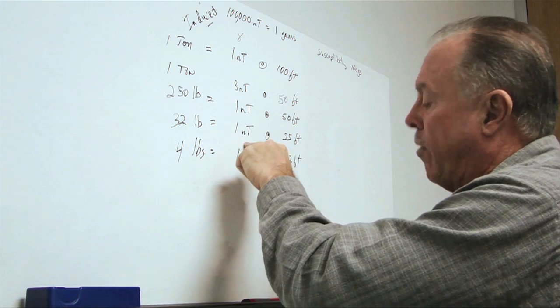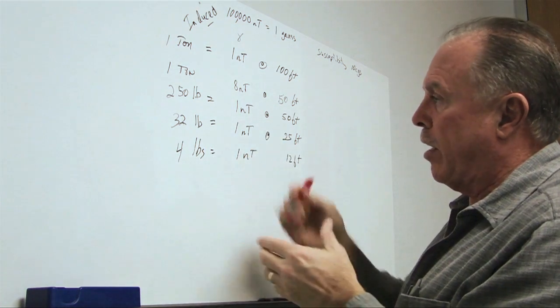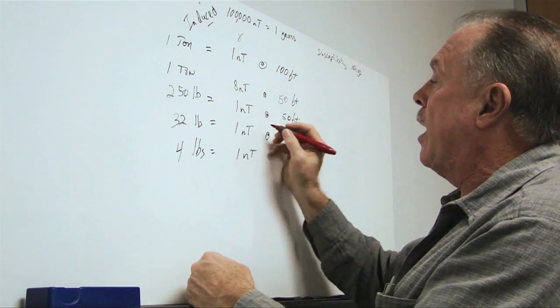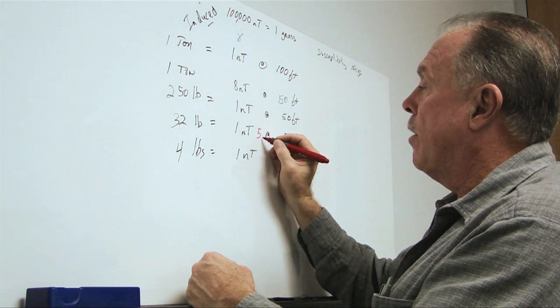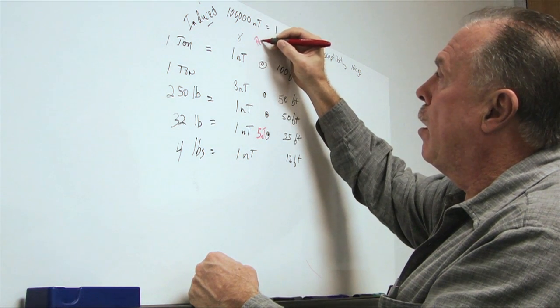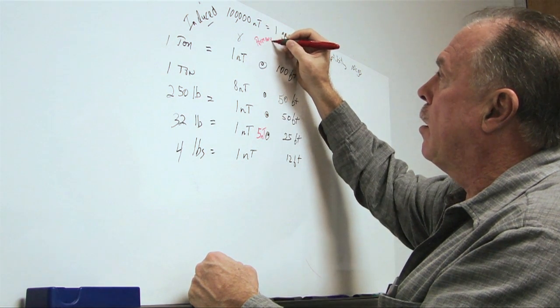So, instead of having a 1 nanotesla anomaly of 32 pounds at 25 feet, we might easily get a 5 nanotesla when we include permanent field.